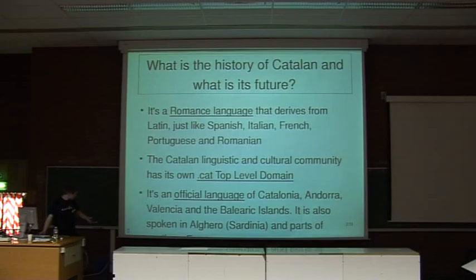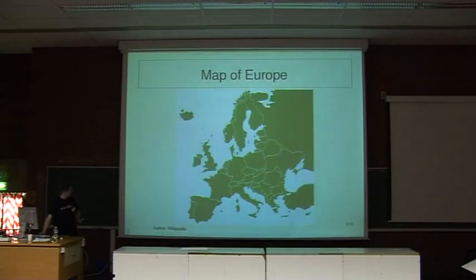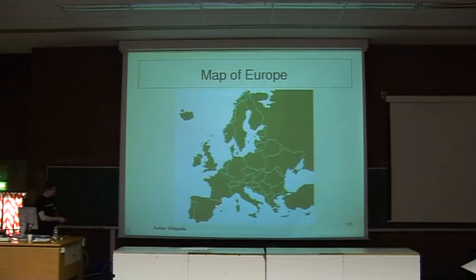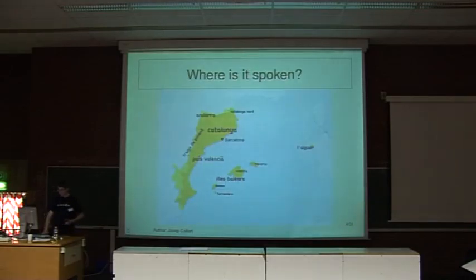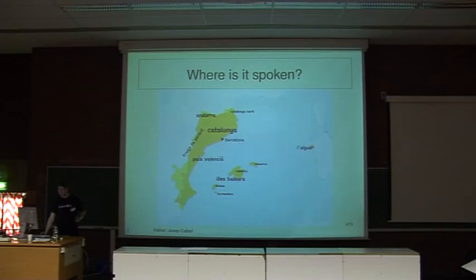I feel there is some line missing here on the map of Europe. Barcelona is in that zone. It's spoken in the Balearic Islands and in Andorra. It's also spoken in País Valencià.